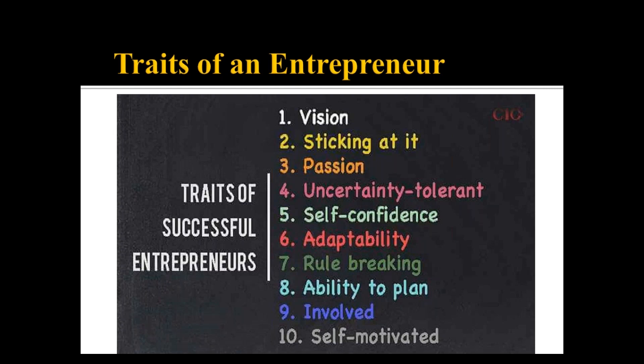Rule breaking — establishing rules that are relevant and required to be followed. An entrepreneur has the ability to plan and execute. They are someone who is involved and engaged in their work. An entrepreneur is self-motivated and self-reliant. These are certain key traits of an entrepreneur.